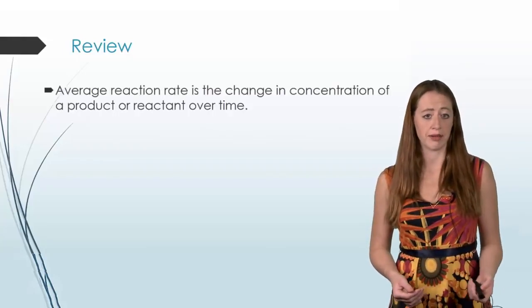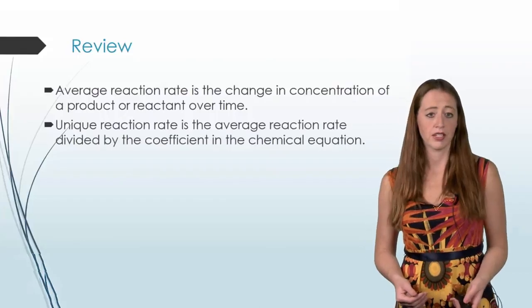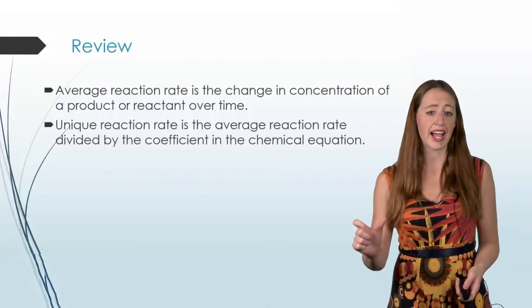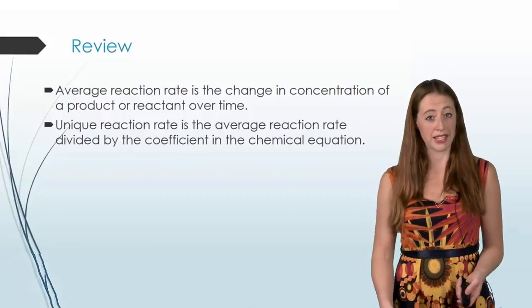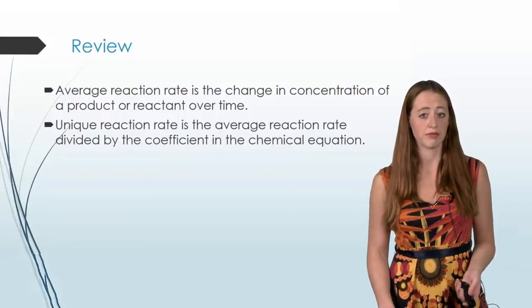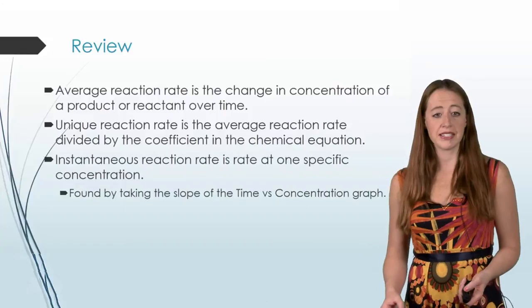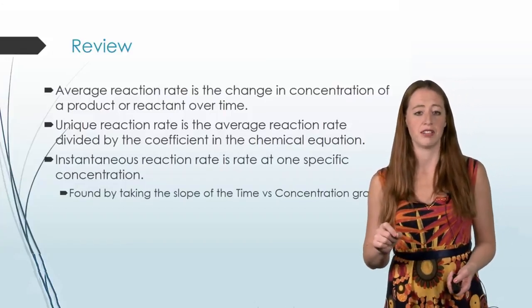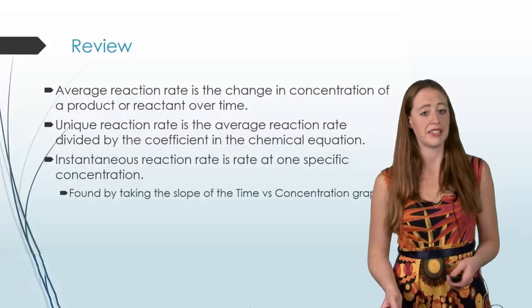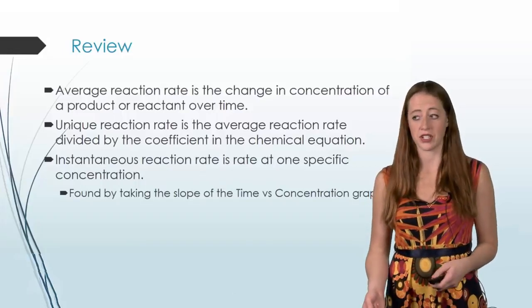So we'll do a quick review on this. Average reaction rate is the change in concentration of a product or a reactant over time. Unique reaction rate is that average reaction rate that we're talking about divided by the coefficient from the balanced chemical equation. And then instantaneous reaction rate is the rate at one specific concentration. And this is found by taking the slope of the time versus concentration graph.